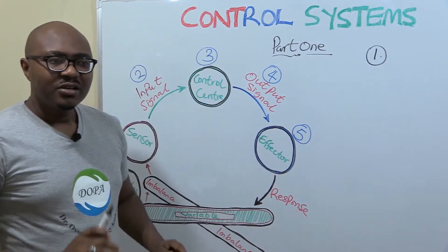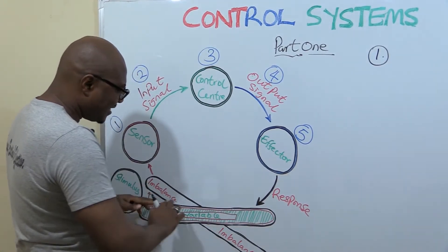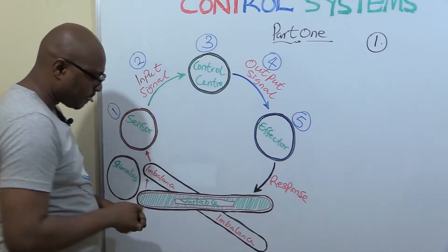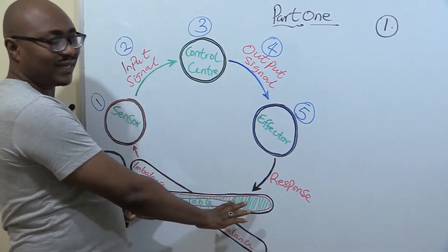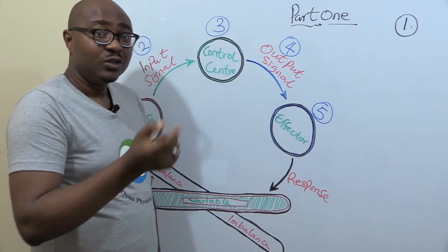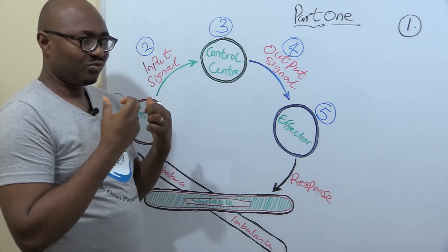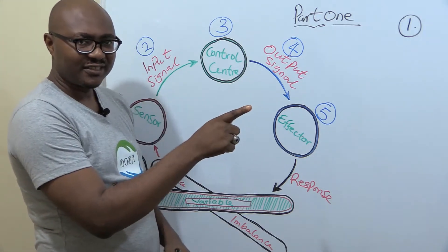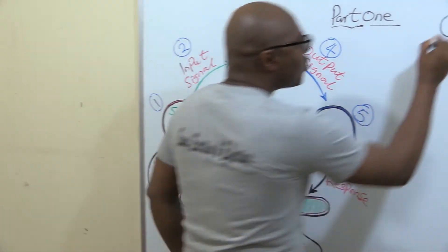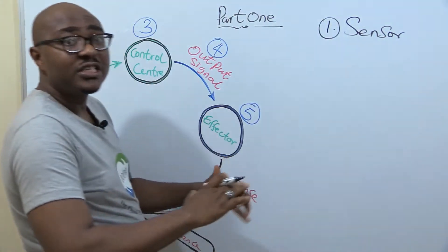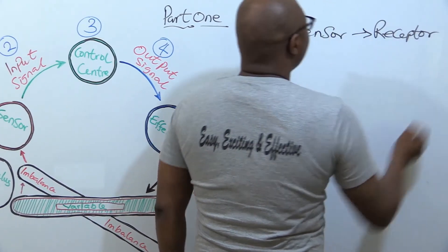Something has changed. Look at it - this is normal range, and now there is an imbalance. So the first thing, very logical, the body needs to do if it wants to bring it back to balance is that it must have a way to detect that there is a change. It must have a way to know and say yes, something has changed. That is what is called a sensor. So number one, you have the sensor. Sensor is also called receptor, or detector.